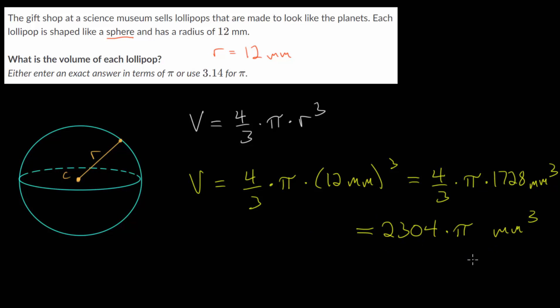we can either leave this as our exact answer, or we can use an approximation for pi that pi is equal to 3.14. So it's your choice at this point, but if you want the exact answer, you can leave pi in your answer. So the volume of each of these lollipops, which are made to look like planets, are 2,304 times pi cubic millimeters.